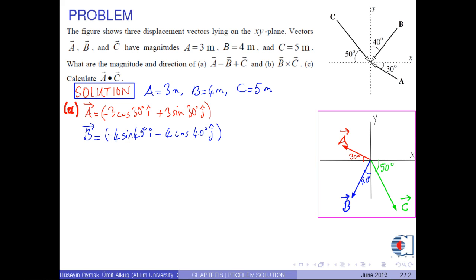And vector C is equal to 5 times cosine 50 degrees i hat minus 5 times sine 50 degrees j hat. We write these vectors according to the following rule.